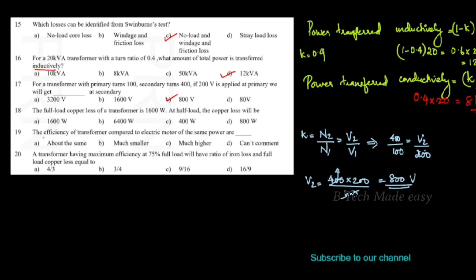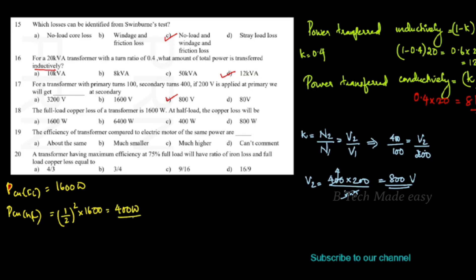The full load copper loss of a transformer is 1600 watts. At half load, the copper loss will be: half load copper loss equals (1/2)² × 1600, which is 1/4 × 1600 = 400 watts. So the half load copper loss is 400 watts.